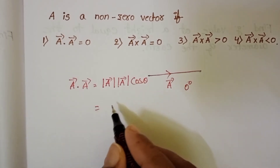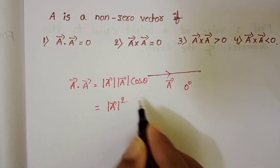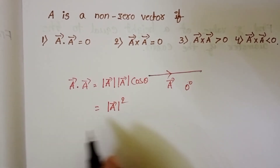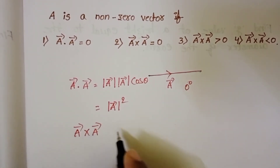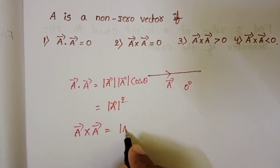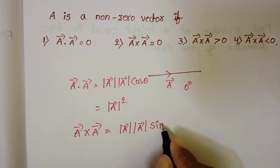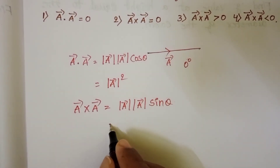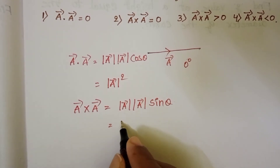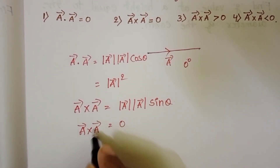So a·a = |a|². For the cross product of a vector by itself: mod(a) × mod(a) × sin(θ). Since sin(0°) = 0, a × a = 0.